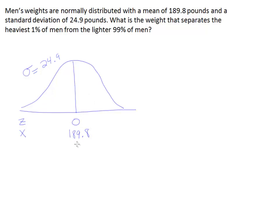So I'm just going to put a little mean symbol underneath that so we know that's the mean. Now, it says there's a standard deviation of 24.9, so I've put that in the upper left-hand corner. And it asks, what is the weight that separates the heaviest 1% of men from the lighter 99% of men?